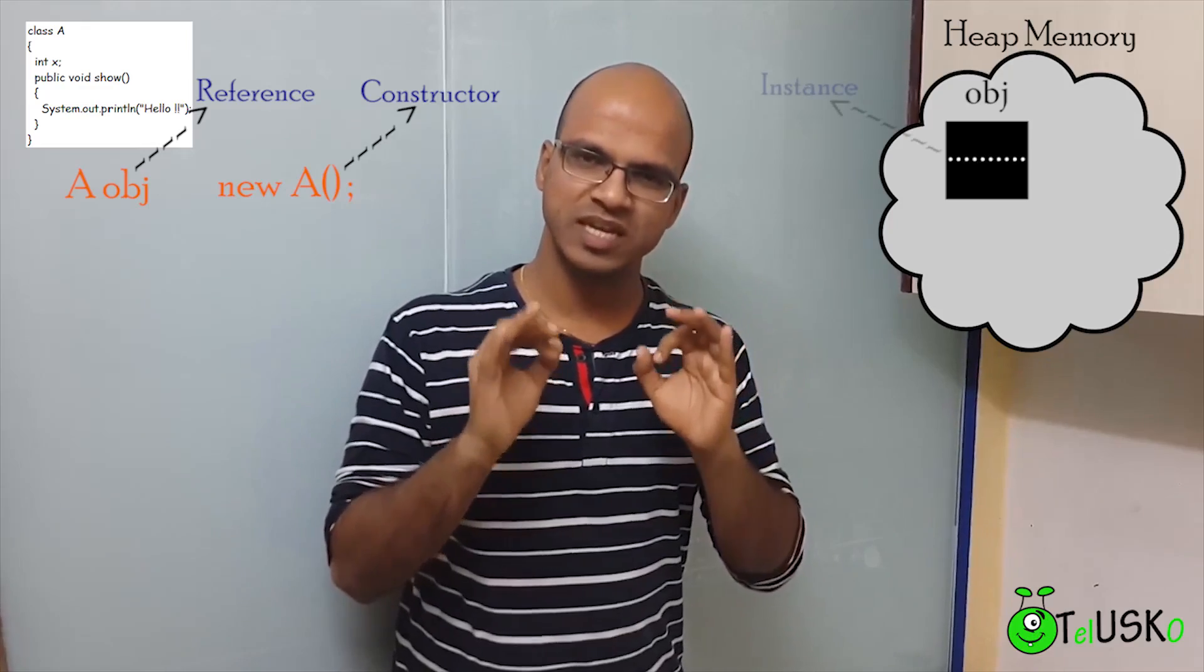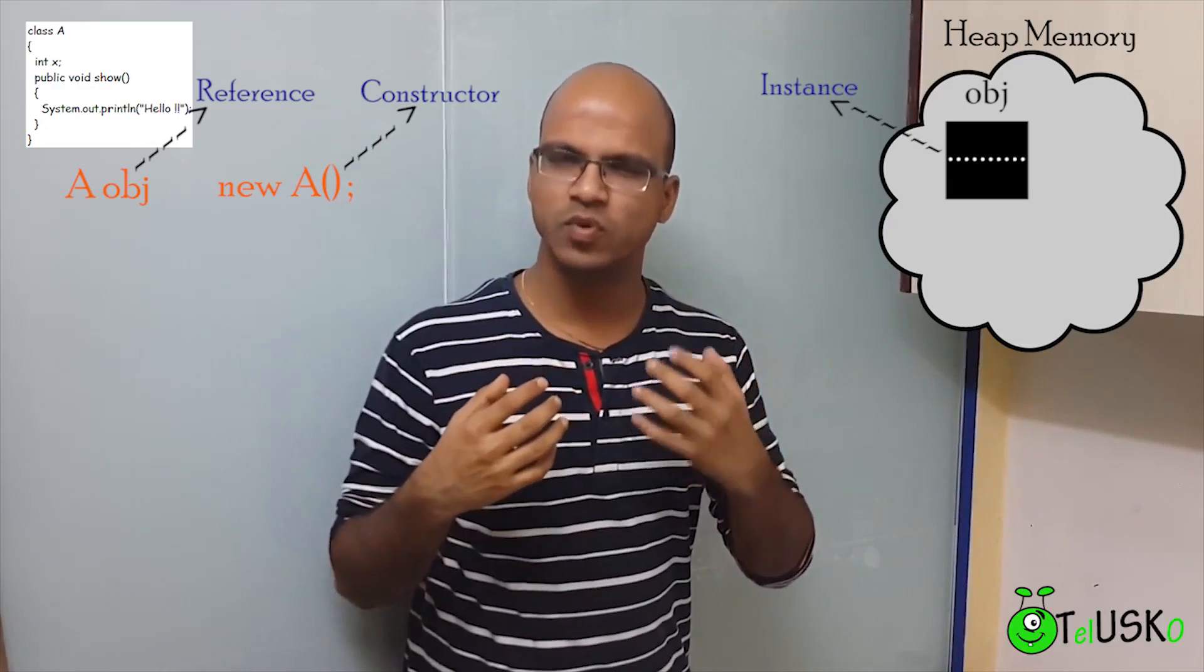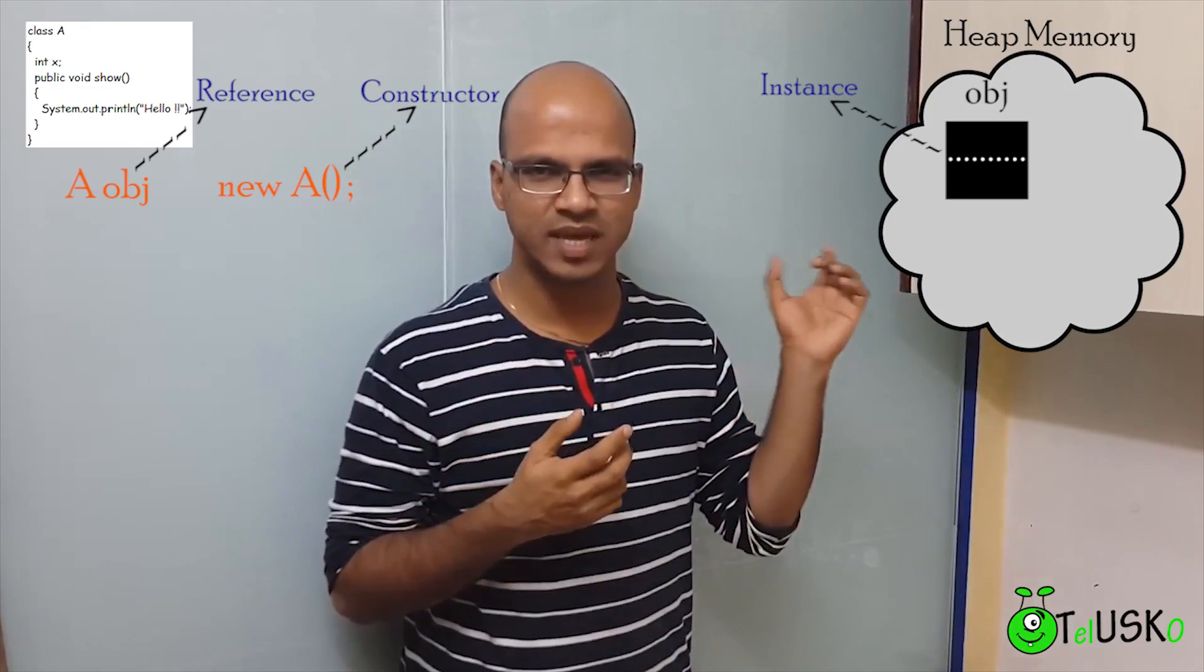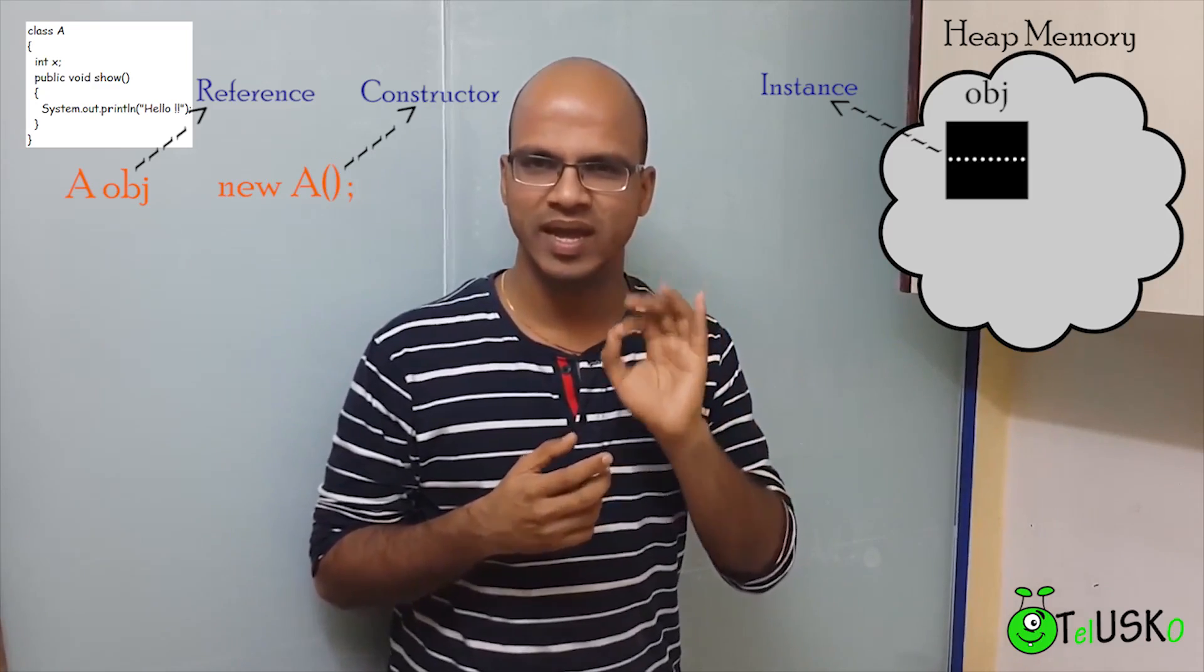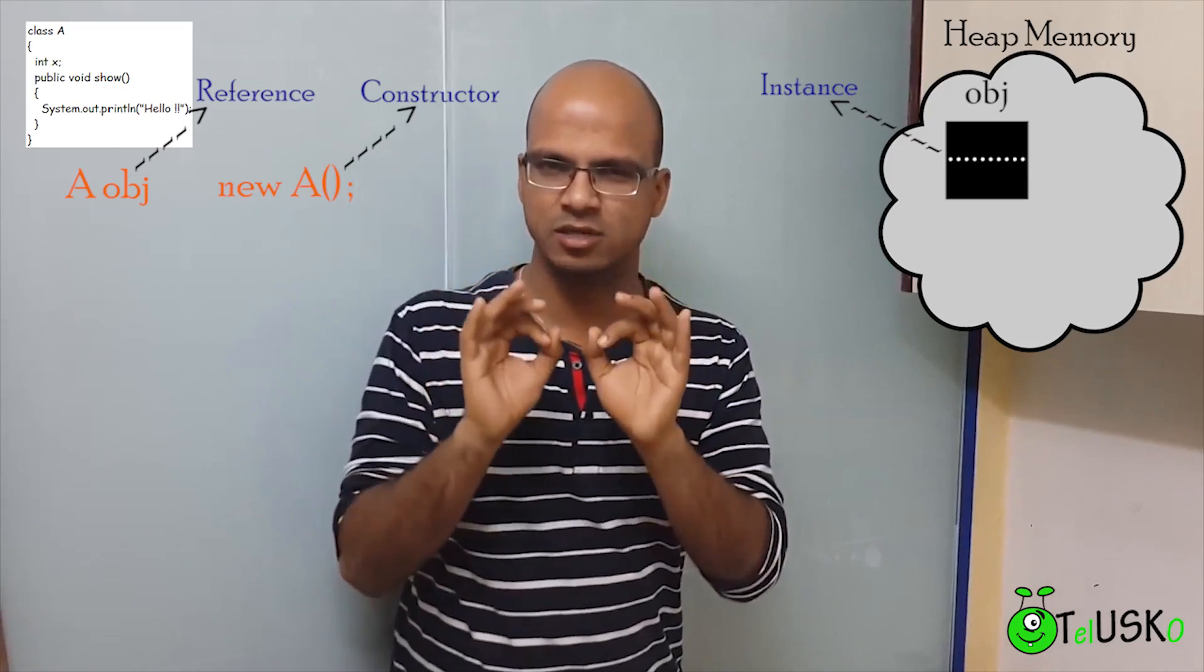Now that object in Java is called as instance. So whenever you say object, we're actually talking about instance. So we want to create an instance there. And to create that instance, we have to mention new A bracket, which is a constructor. So A bracket is a constructor.